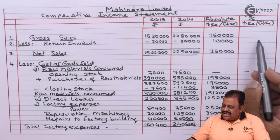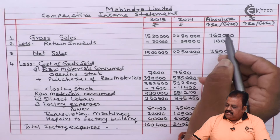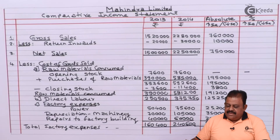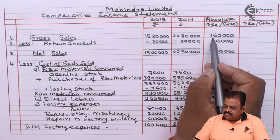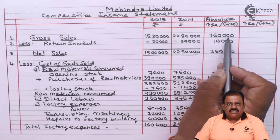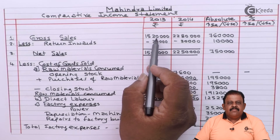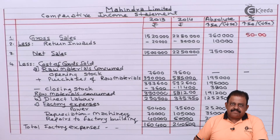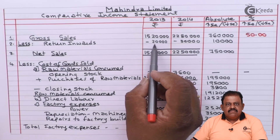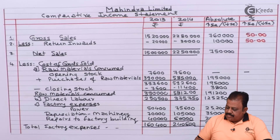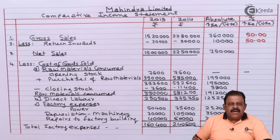Now we complete the last column: percentage increase or decrease. The formula is: amount in third column divided by amount in first column, multiplied by 100. For gross sales: 7 lakh 60,000 divided by 15 lakh 20,000 multiplied by 100 equals 50%. For net sales: 7 lakh 50,000 divided by 15 lakhs multiplied by 100 equals 50%.